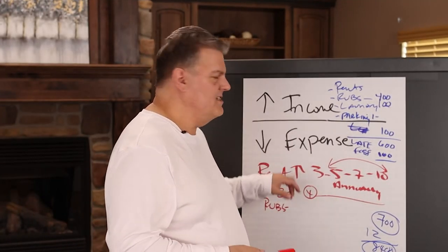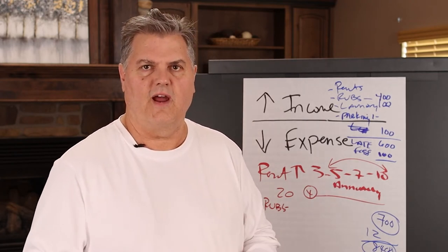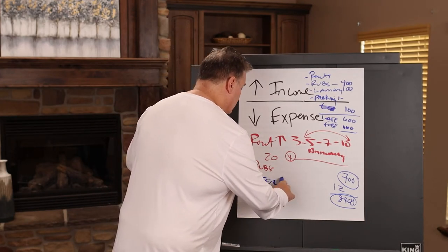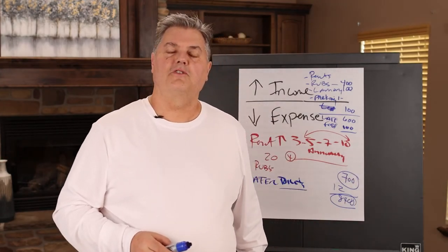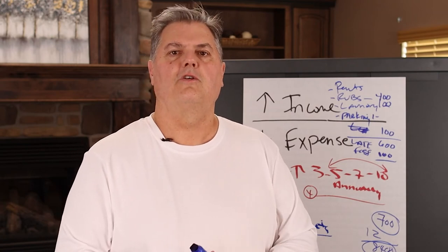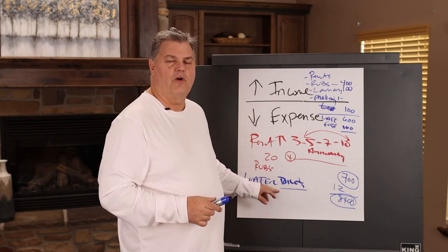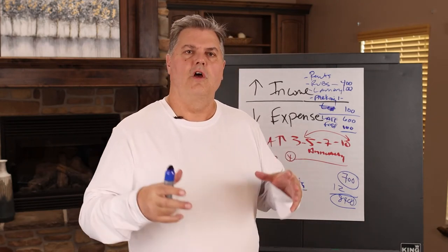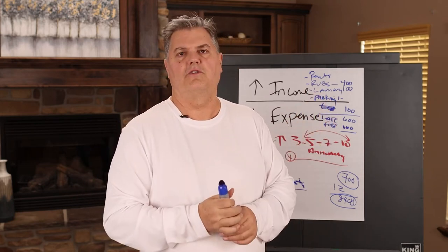Now let's go into expenses — some ways you can decrease them. One main way to decrease water expenses is to look at toilets. We want low-flow toilets that don't use as much water. Some older toilets use a ton of water. If you can't afford to change the toilets, you could put a brick in the tank, which cuts down the volume of water going through your system.